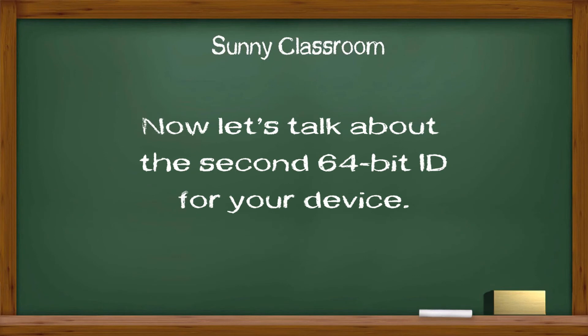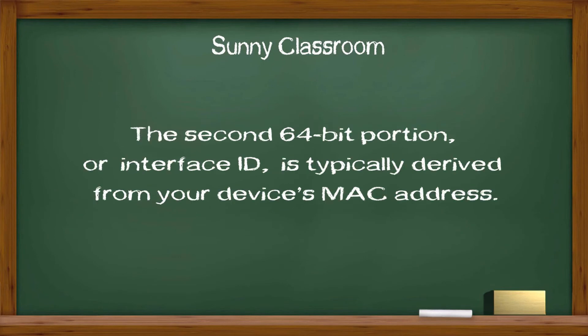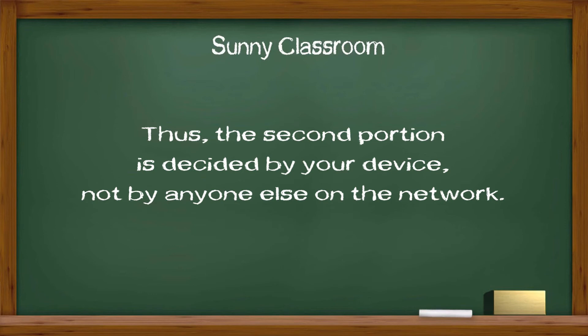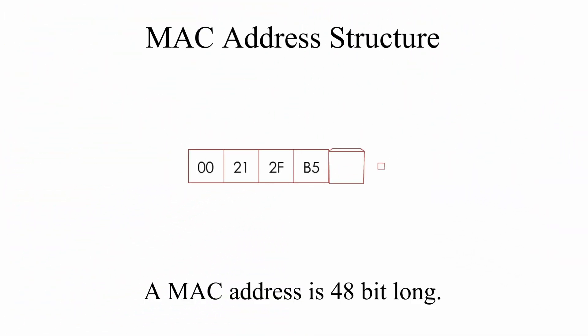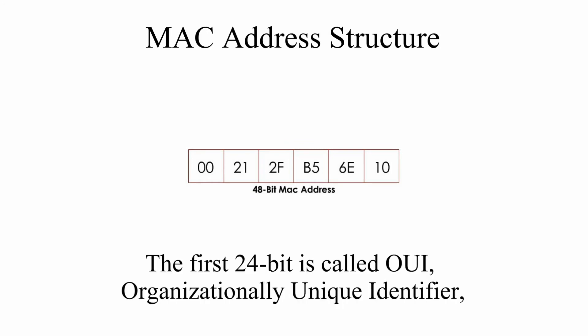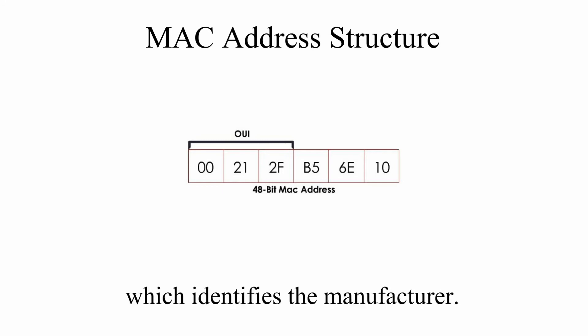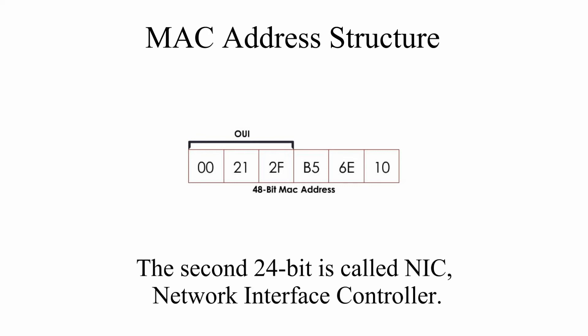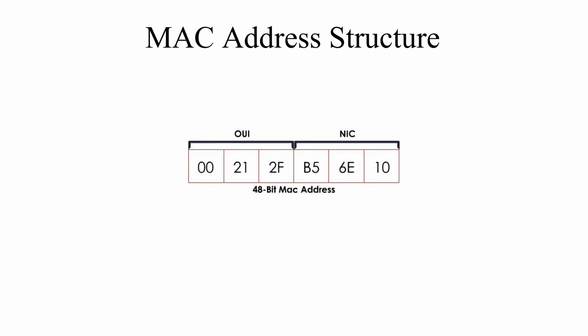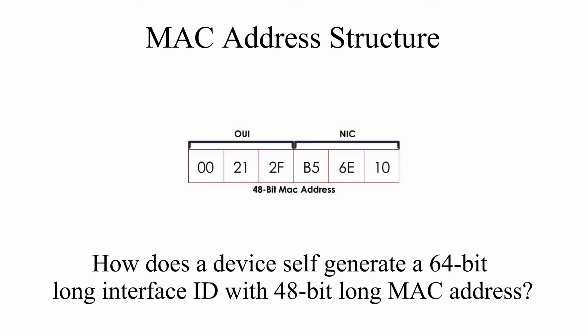Now let's talk about the second 64-bit ID for your device. The second 64-bit portion, or interface ID, is typically derived from your device's MAC address. Thus, the second portion is decided by your device, not by anyone else on the network. A MAC address is 48-bit long. The first 24-bit is called OUI, Organizationally Unique Identifier, which identifies the manufacturer. The second 24-bit is called NIC, or Network Interface Controller.